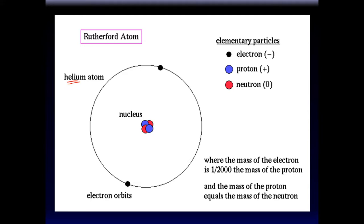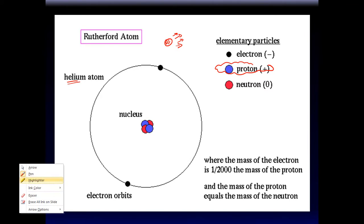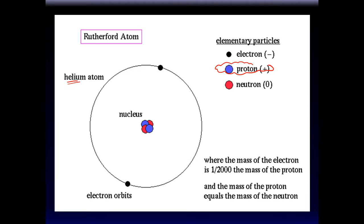What does it mean for a proton to have a positive charge and an electron to have a negative charge? It means protons are entities able to attract other things, kind of like magnets. They don't attract just anything — they attract things called negative charges. Those entities that attract negative things are called positive by default. So for a proton to have a positive charge simply means it attracts things that are negatively charged, just like magnets attract.